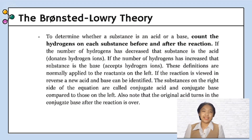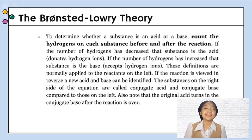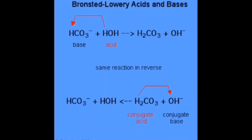Hello, my name is Lucien. I'm here to teach you how to determine whether a substance is an acid or a base using the Bronsted-Lowery theory. To determine whether a substance is an acid or a base, count the hydrogens on each substance before and after the reaction. If the number of hydrogens has decreased, that substance is the acid. If the number of hydrogens has increased, that substance is the base.